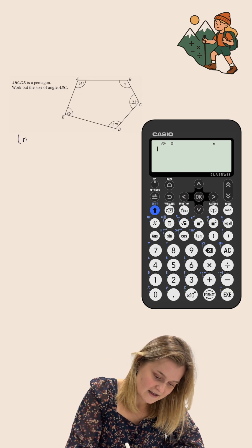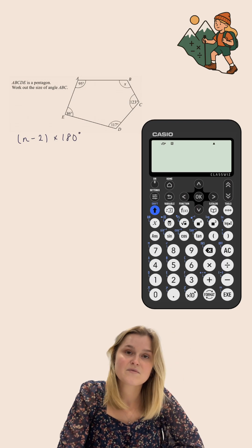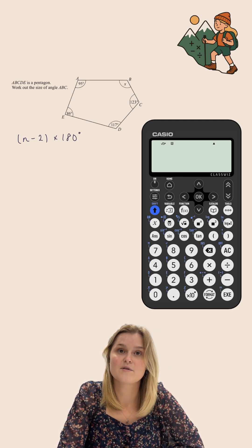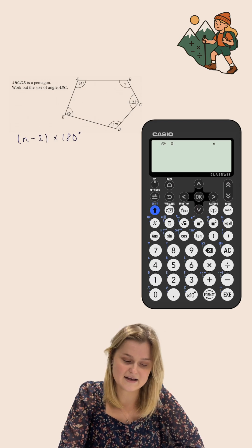Now, this formula is N take away 2 multiplied by 180 degrees, where N is the number of sides of the polygon. Because this polygon has five sides, because it's a pentagon,